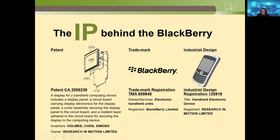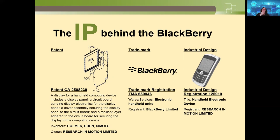BlackBerry example combining three IP types: a patent for the display of a handheld computing device, the BlackBerry trademark — the word with its distinctive font and logo — and industrial design for the look of the device, which serves no functional purpose. Three different forms of intellectual property for one single product.